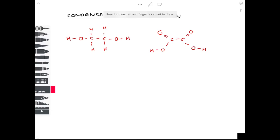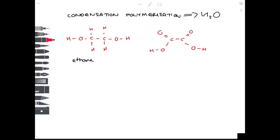Condensation polymerisation involves two monomers reacting with loss of a small molecule — water. For example: ethane-1,2-diol (containing two OH alcohol groups) reacts with ethanedioic acid (containing two COOH carboxylic acid groups). The OH from the carboxylic acid and the H from the alcohol end combine to form water, and the two ends join together to form a polyester.